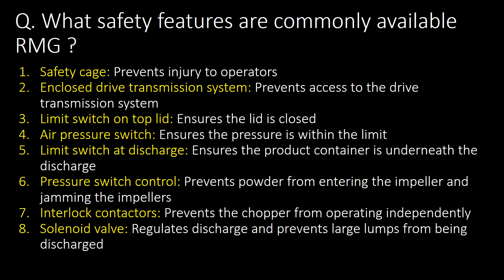What safety features are commonly available in RMG? Following are the 8 safety features commonly available in RMG: 1st safety cage, 2nd enclosed drive transmission system, 3rd limit switch on top lid, 4th air pressure switch, 5th limit switch at discharge, 6th pressure switch control, 7th interlock contactors, and 8th solenoid valve.